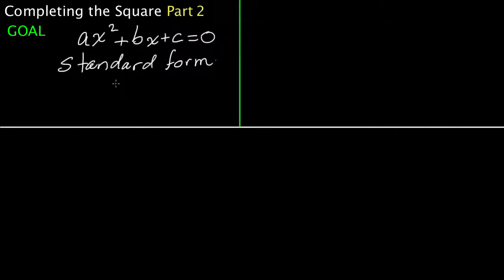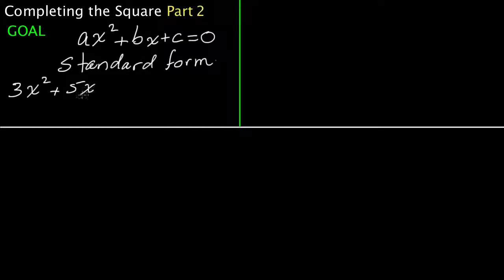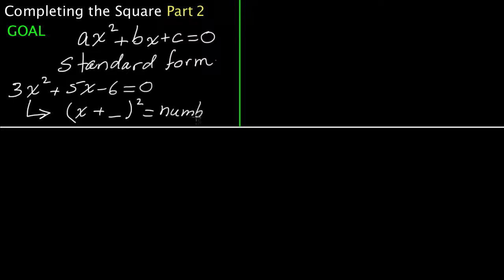Based on different techniques, this form gives us a lot of information about the equation. One of the examples we're going to look at is an equation written in standard form that looks like 3x squared plus 5x minus 6 equals zero. The difference between this example and the ones in the other video is that we have a coefficient other than 1 — in this case, it's 3.